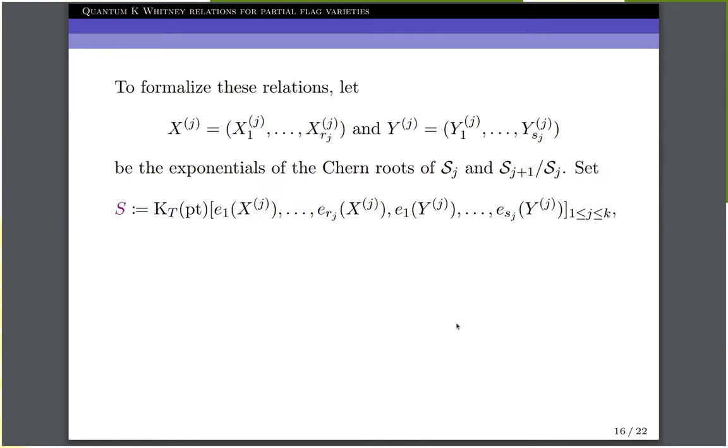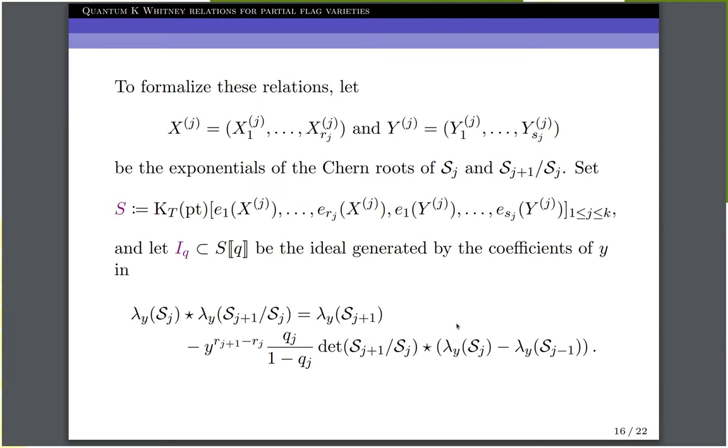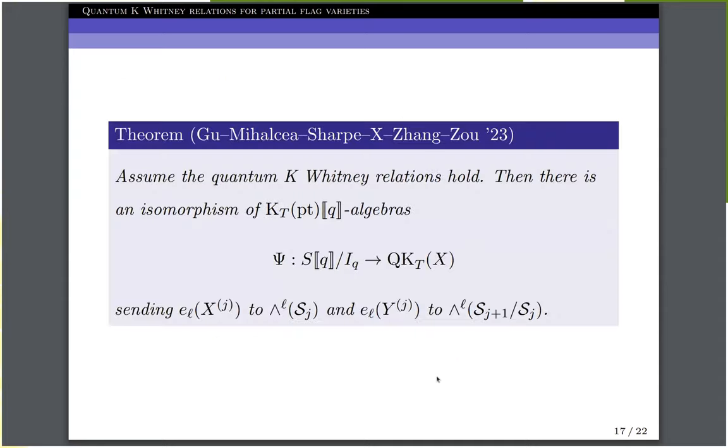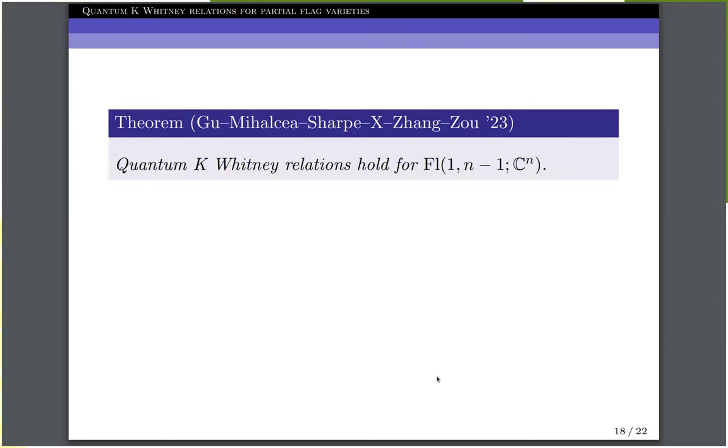We let S be the algebra generated over the equivariant K-theory of a point by elementary symmetric polynomials in these formal variables. We can write IQ for the ideal inside the formal power series ring over S generated by the coefficients of Y in these deformed relations written in terms of our formal variables. Then our first result says that if the deformed relations hold in quantum K-theory, then they form a complete set of relations in the sense that this formal power series ring over S modulo the ideal IQ is isomorphic to the equivariant quantum K-theory ring.